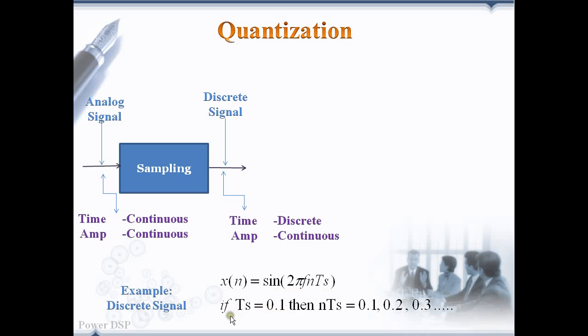If we take the sampling period as 0.1, then at the multiples of 0.1 we are going to take the samples: at 0.1, 0.2, 0.3 and so forth. So time is discretized but amplitudes will take continuous values.